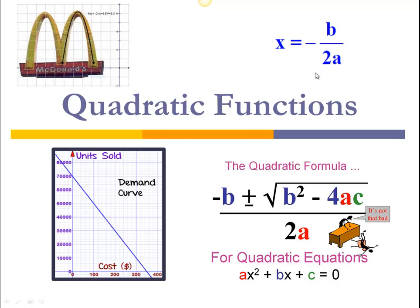The first one is the vertex formula, that's the one up here on the upper right, the negative b over 2a. That's what we use to find the highest or lowest point on a parabola of a quadratic function.